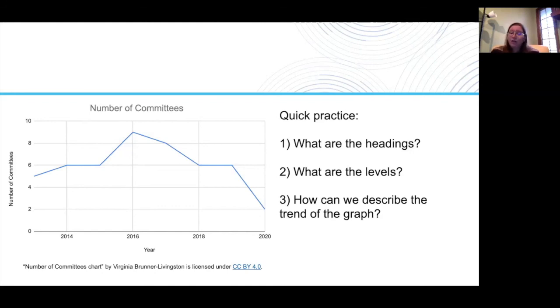So we can ask ourselves, what happened around this time that maybe caused the number of committees to shrink from six all the way down to two? There are many different factors for this. There could be many different possibilities. So when we infer things like this, there often are not incorrect answers, unless they are completely unrelated to the topic at hand.